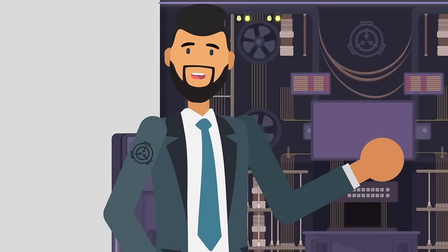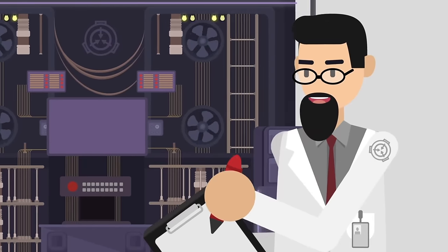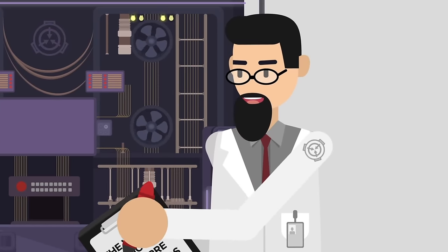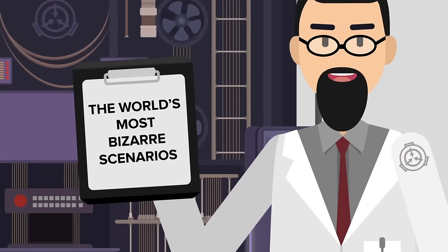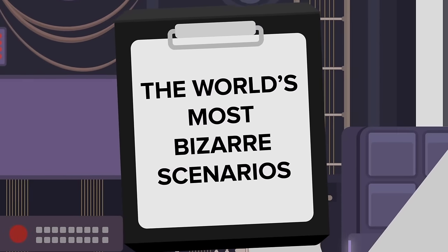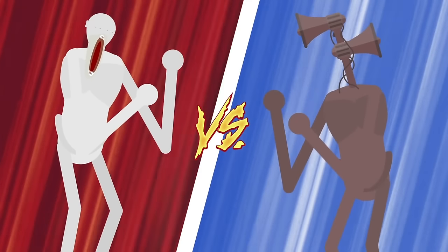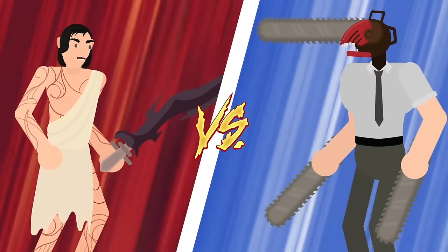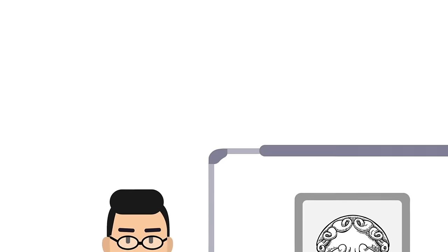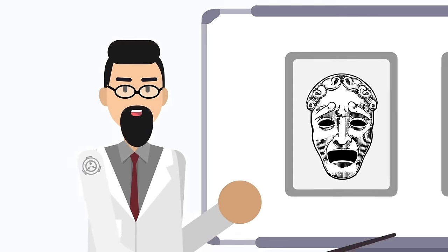Here we are again with the Anometron 6000, our state-of-the-art simulation computer that helps us create hyper-accurate simulations of some of the world's most bizarre scenarios. Whether it's SCP-096 vs. Siren Head, Abel vs. Chainsaw Man, or now perhaps our most ridiculous matchup yet.